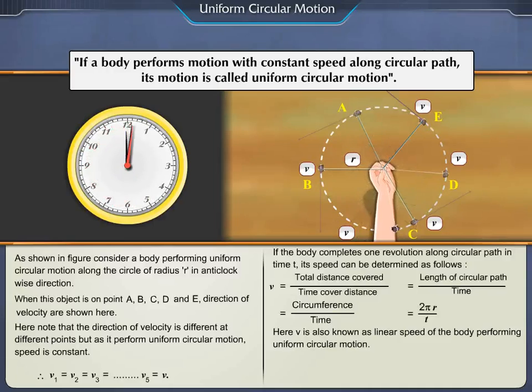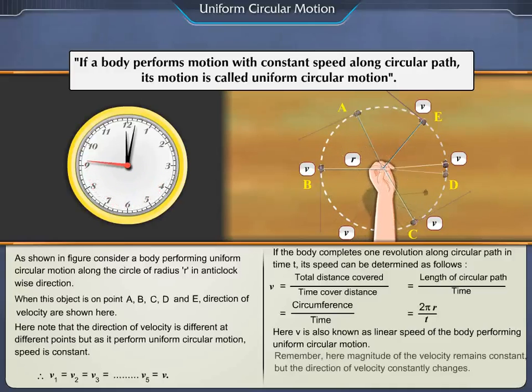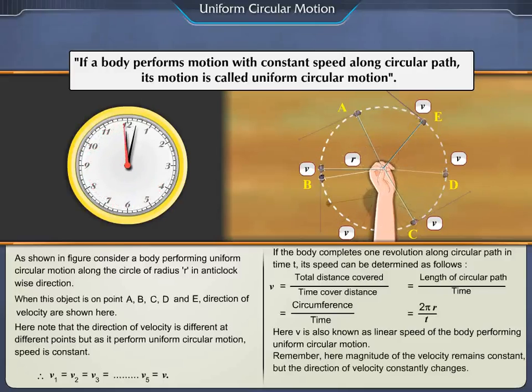Can uniform circular motion be considered to be motion with uniform velocity? Think over it. Remember, here magnitude of the velocity remains constant. But, the direction of velocity constantly changes. So, in fact, uniform circular motion is accelerated motion.